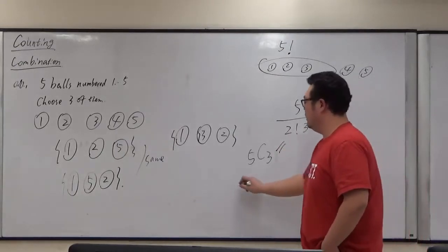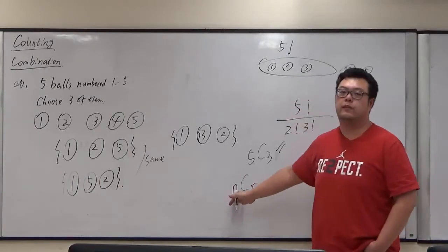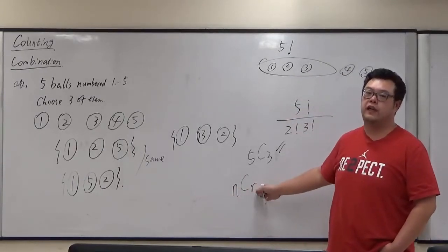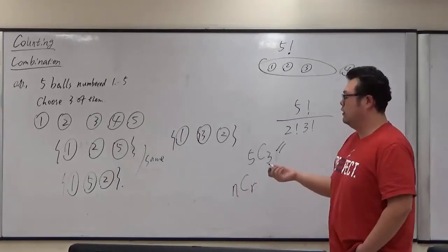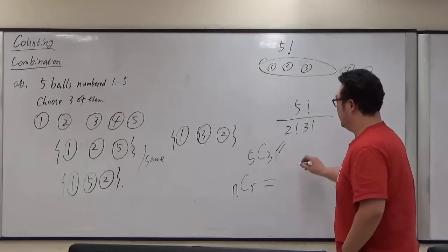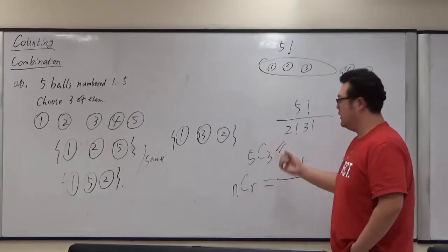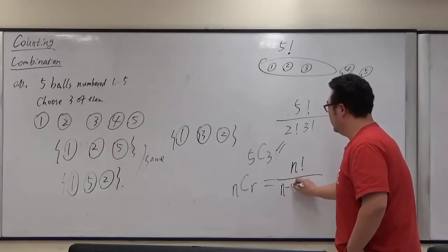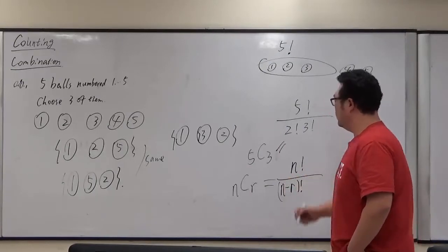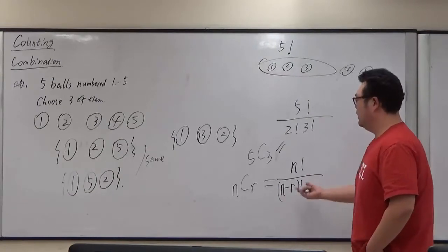But in general, if we have n possible outcomes to choose r from there, then it is no order at all. So we have first of all n factorial to arrange that. We do not care whatever remaining we don't want to choose, the order.